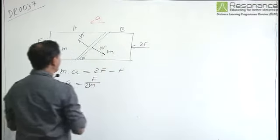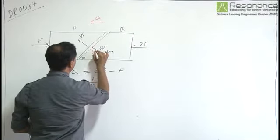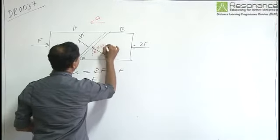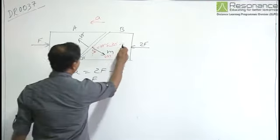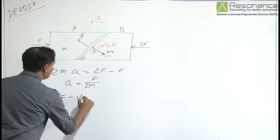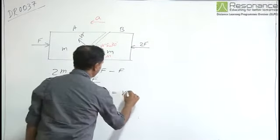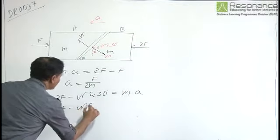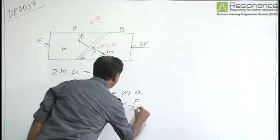So if I consider the block B, then N is acting in this particular direction. This angle is 30 degrees, so this force can be written to be equal to N sine 30. If I consider the free body diagram of block B, then I can write 2F minus N sine 30 to be equal to M into F by 2M.